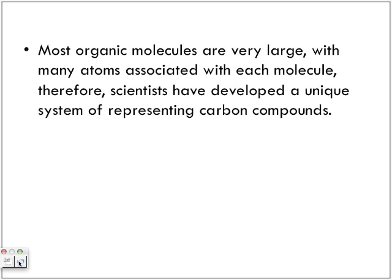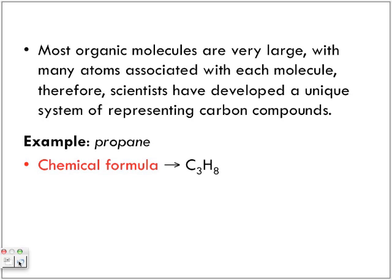Most organic molecules are very large, with many atoms associated with each molecule. Therefore, scientists have developed a unique system of representing carbon compounds. Here we have an example of propane. This is the formula C3H8, and it can have other isomers that can still show C3H8. This is pretty much the main isomer, and we call it propane. We've got three carbons and eight hydrogens that circle around each carbon.